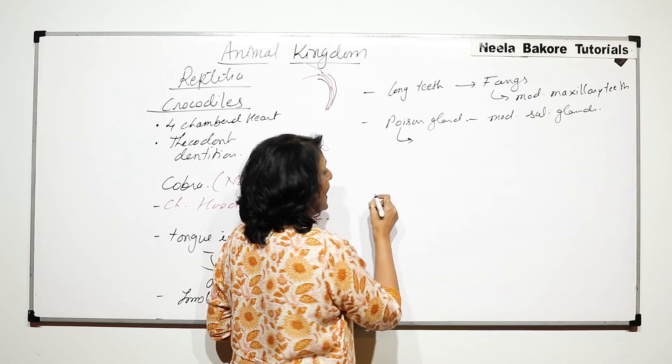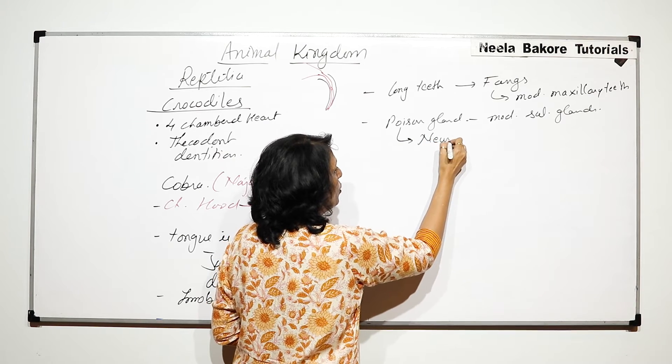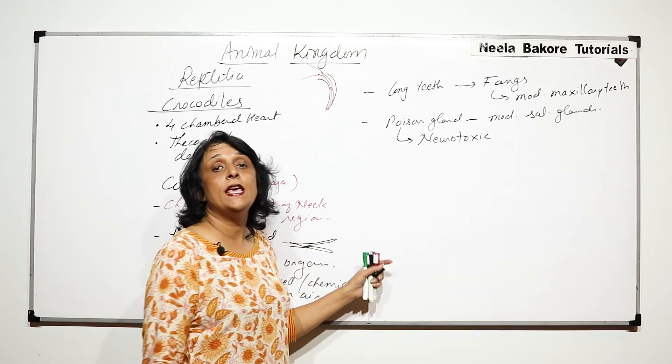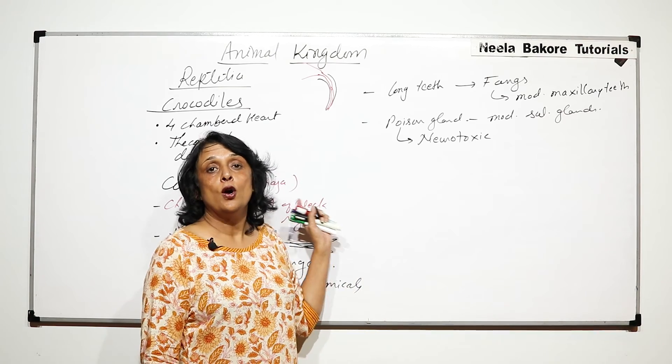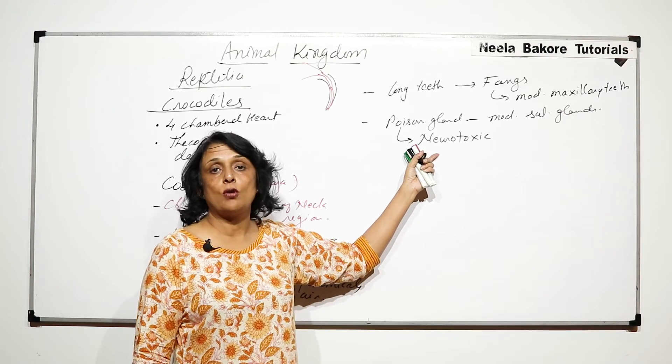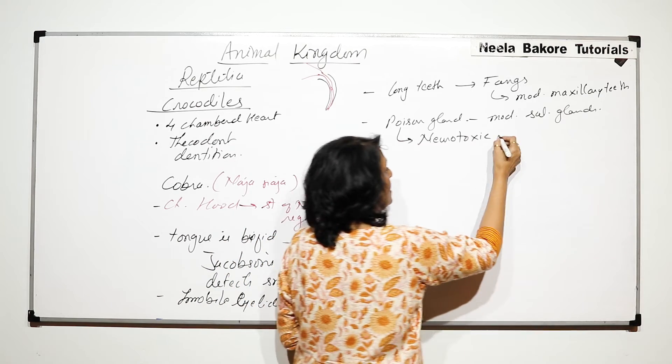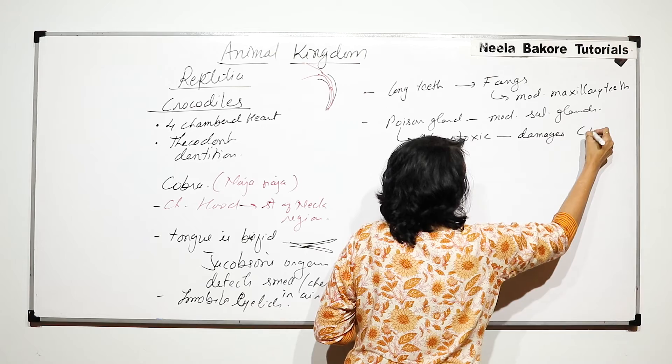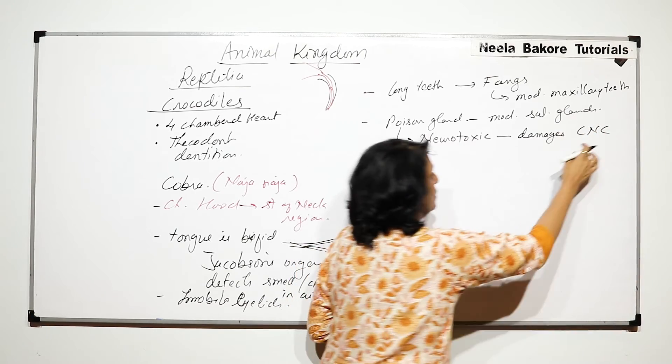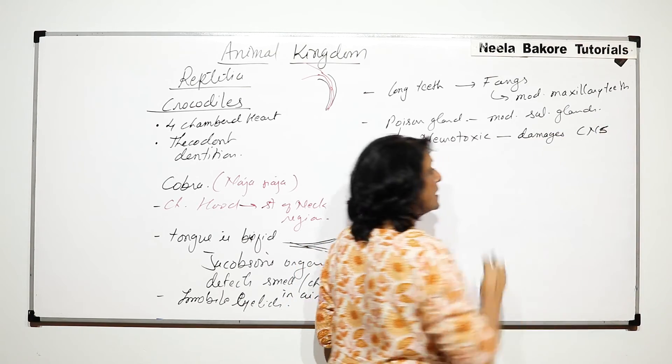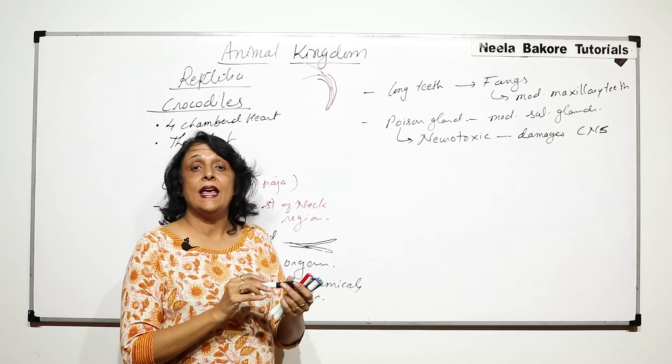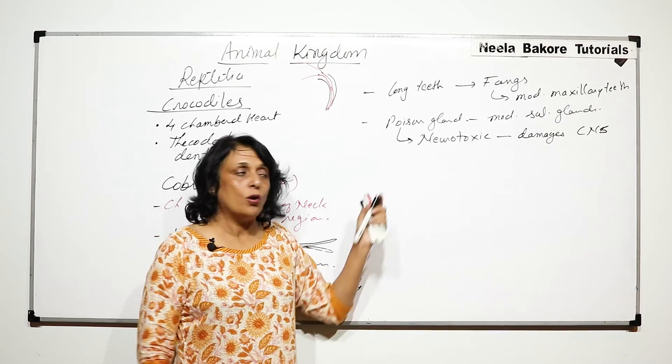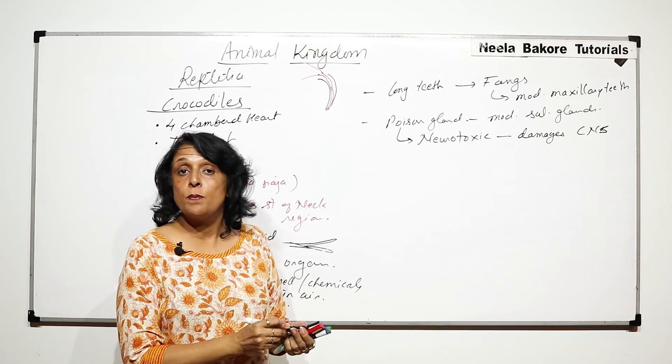The poison can be a neurotoxin or it could be hemolytic. In case of cobra, it is a neurotoxin—it damages the CNS, the central nervous system. In other snakes it could be hemolytic poison also, and this poison is a protein.